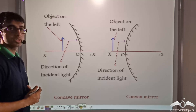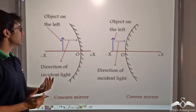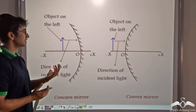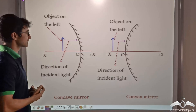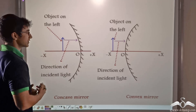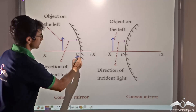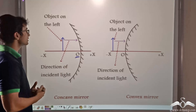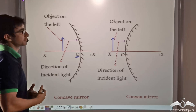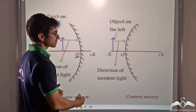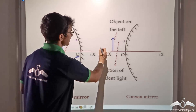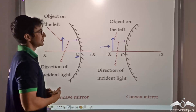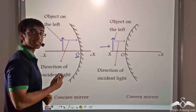In all experimental setups, the object is always placed to the left or in front of the mirror. The object on the principal axis is placed to the left of the origin, so the object distance is measured towards the left of the origin and is therefore measured as negative. Similarly, in the case of a convex mirror, since the object is placed to the left of the origin, the distance of the object is also measured as negative.